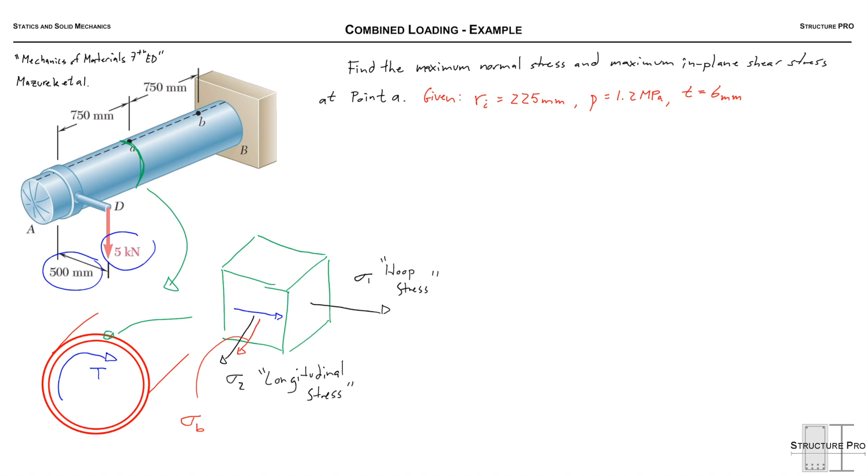We know this bending stress provides tension on the top, that's why we've drawn a tensile stress coming out of the element. We can visualize that, you know, the moment 5 kN pulling away from the top and pushing down at the bottom as it acts.